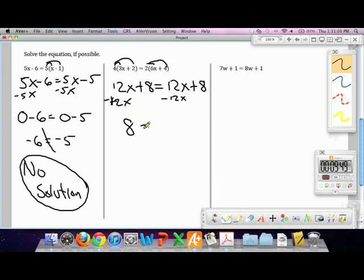Are there any variables left? No. So we're not going to have one solution, but this is true. So this is called, you call this one of two things. Your book will call this an identity. What this is really saying is that what solutions are possible? All real numbers are the solutions.